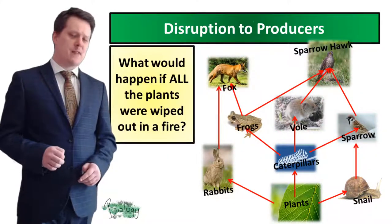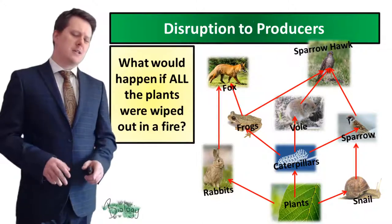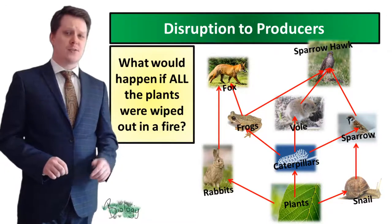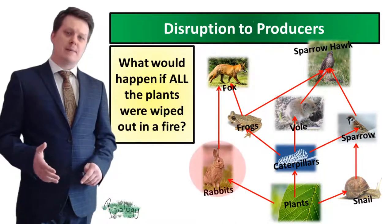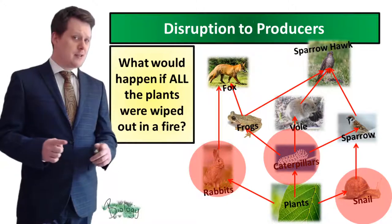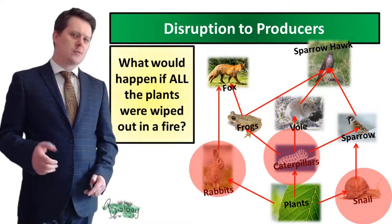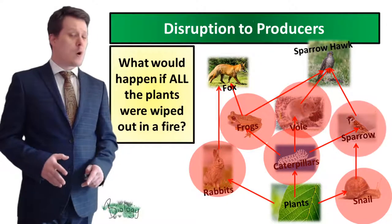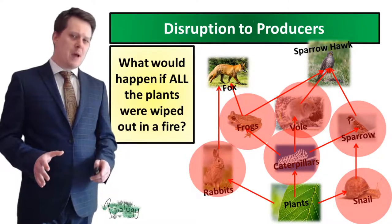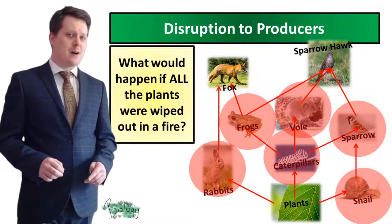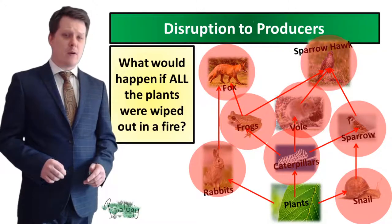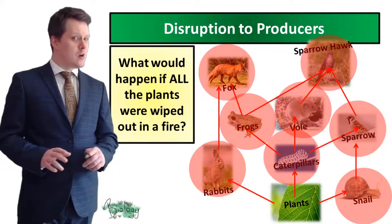Now we're going to look at what would happen if there was a disruption to our food web. Imagine what's going to happen if all these plants are wiped out in a fire. Our rabbits, caterpillars and snails aren't going to have anything to eat so eventually they will die out. This also means the frog, the vole and the sparrow aren't going to have anything to eat and they too will die. With all these primary and secondary consumers wiped out, our apex predators like the fox and the sparrowhawk are also going to die because there's not going to be any food.